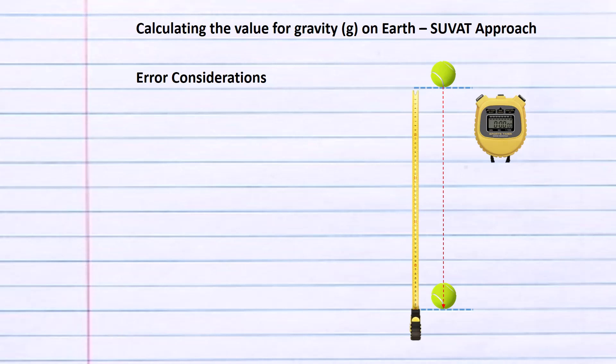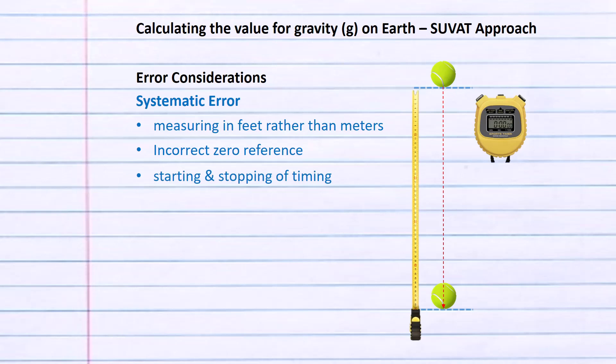Finally let's look at the error considerations in this investigation. Systematic errors: when I asked my class these are some of the main systematic errors that could be identified. Some students measuring in feet rather than meters, affecting every measurement taken from every trial. Potentially incorrect zero reference - students using the wrong part of the tape to reference zero. The starting and stopping of the timing - some groups counting in a 3-2-1 drop, other students simply dropping the ball without any lead-in countdown. Whatever technique was used, it was used for each trial and therefore generates a systematic error.